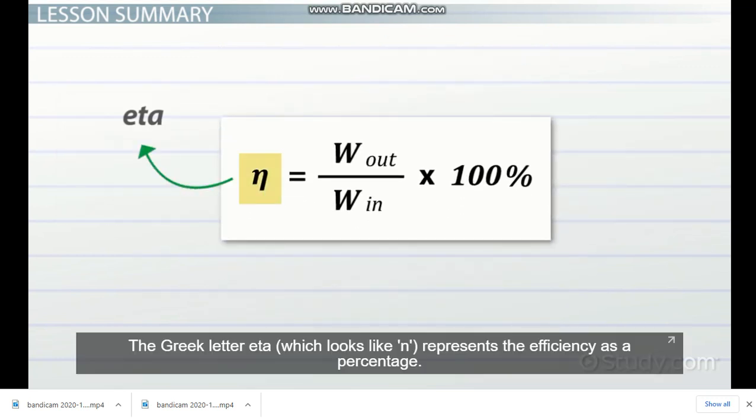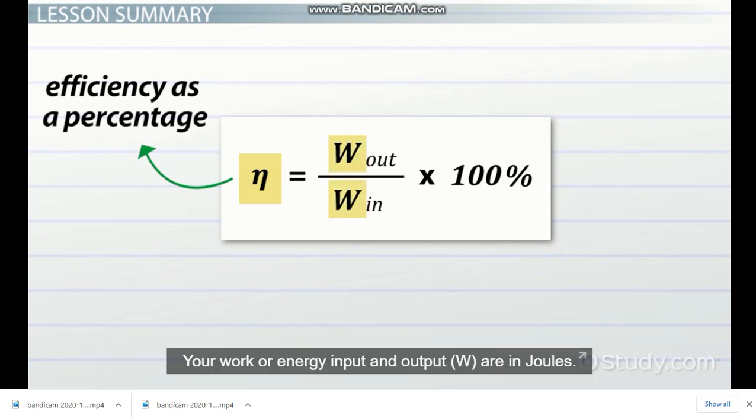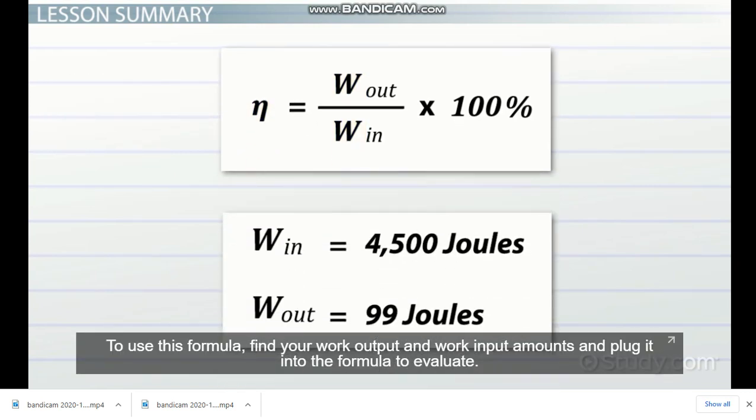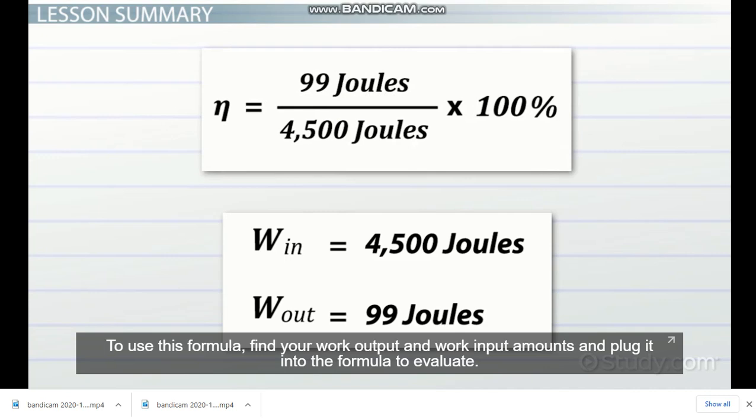The Greek letter eta, which looks like an N, represents the efficiency as a percentage. Your work or energy input and output, W, are in joules. To use this formula, find your work output and work input amounts and plug it into the formula to evaluate.